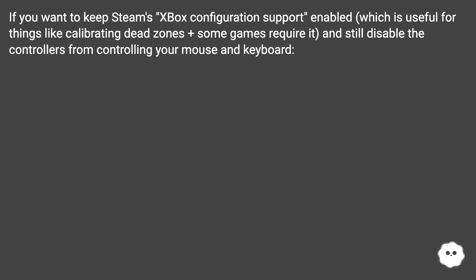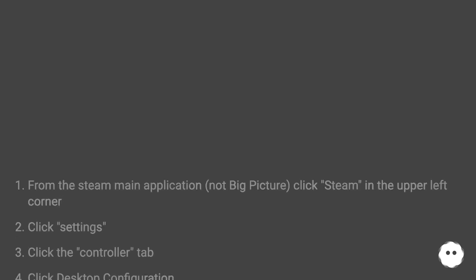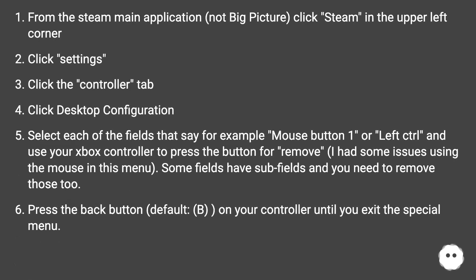If you want to keep Steam's Xbox Configuration Support enabled — which is useful for things like calibrating dead zones, and some games require it — but still disable the controller from controlling your mouse and keyboard: from the Steam main application (not Big Picture), click the Steam menu in the upper left corner, click Settings, click the Controller tab, then click Desktop Configuration.